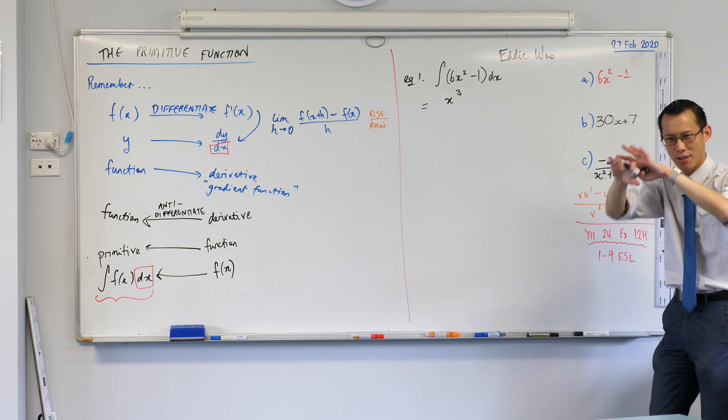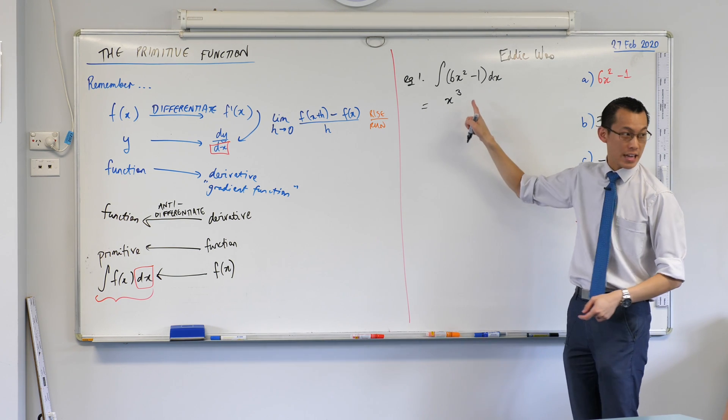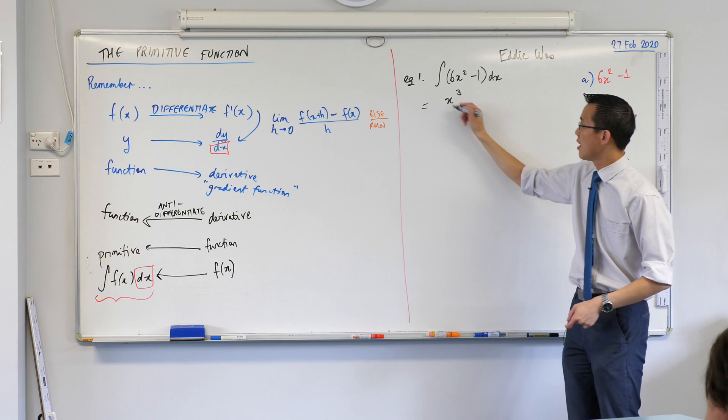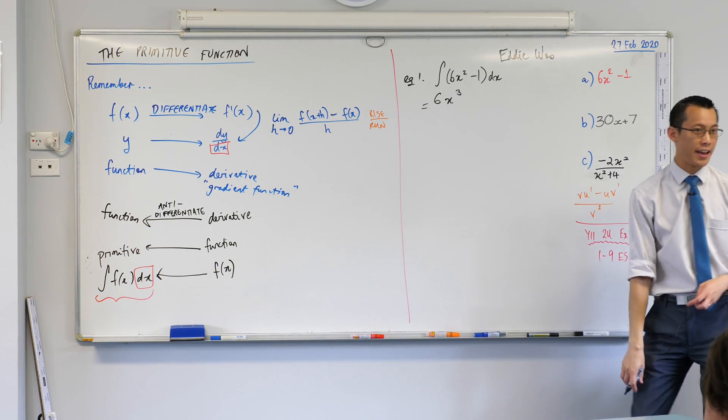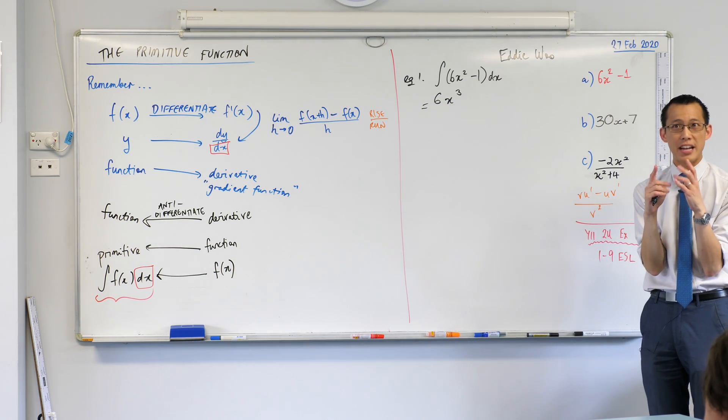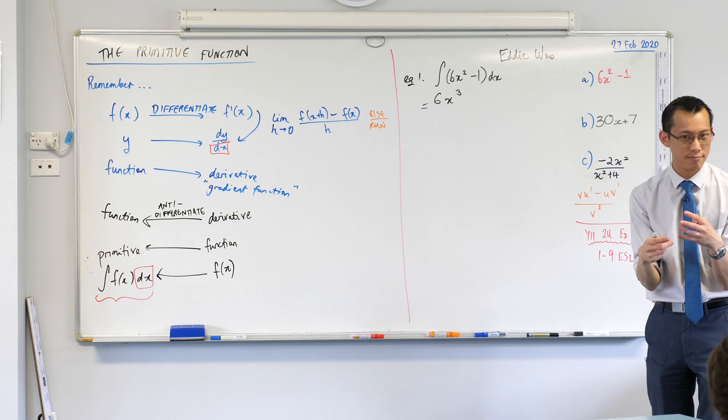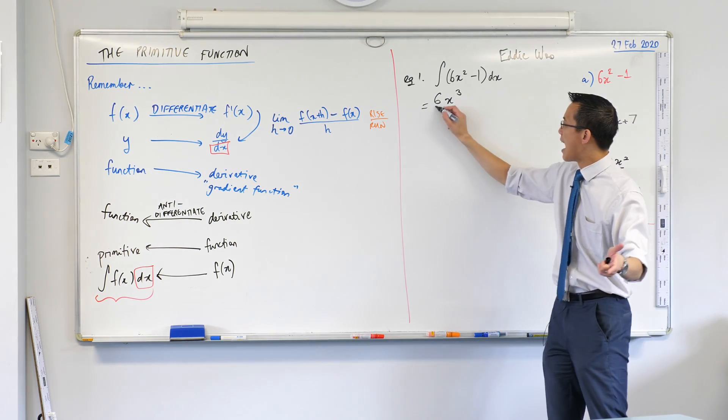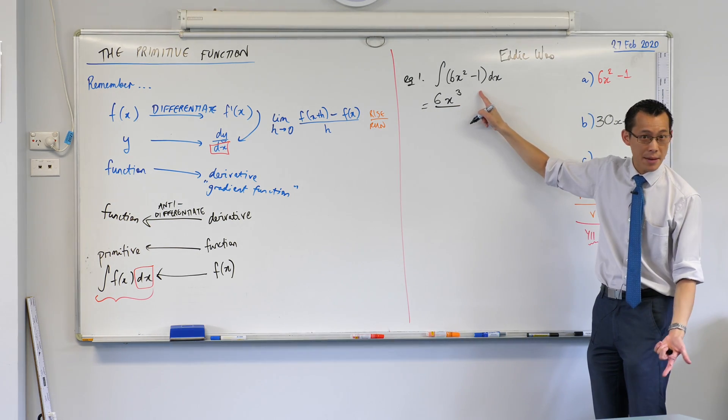I'm going to come to trying to form a rule around it in a second. I've increased the index. That 6 is still hanging around there. And then after I increase it I have to undo the other thing, which means I have to divide, right? I have to divide by that index. Does that make sense?